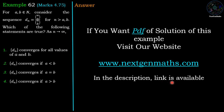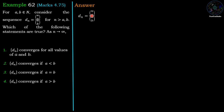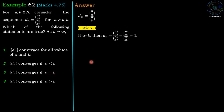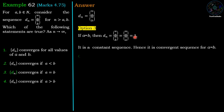dn equals nCa divided by nCb. First, we discuss option three: dn converges if a equals b. Suppose a equals b, then dn equals nCa divided by nCb equals nCa divided by nCa, which equals 1. So dn equals 1, a constant sequence, and a constant sequence is always convergent. Therefore option three is a correct option.